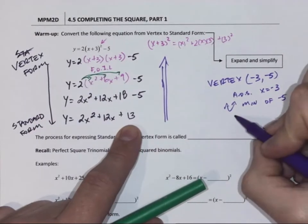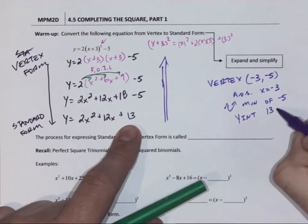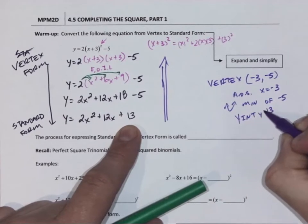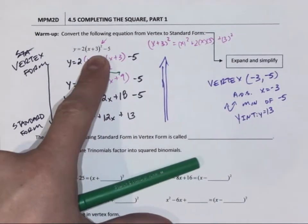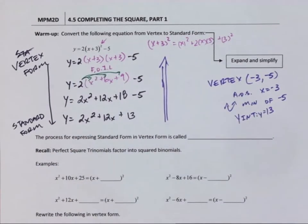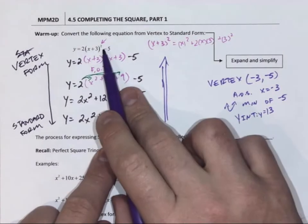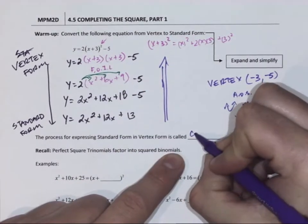When we're in standard form, we have a y-intercept of 13. Or once we're in vertex form, we can graph using transformations. So the process of expressing standard form, getting it into vertex form, is called completing the square.